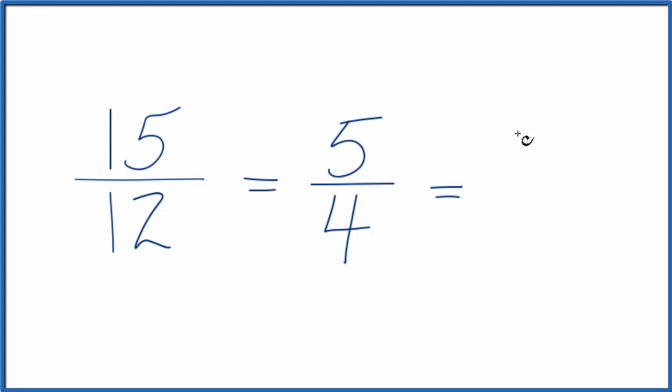4 goes into 5 one time with 1 left over. Bring the 4 of the denominator across. And 5 fourths would equal 1 and 1 fourth.